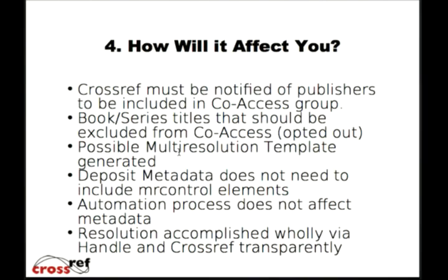The big question everybody ends up asking is: what do I have to do differently? Mostly it's the same. The first thing you have to do is say that these publishers are okay to do CoAccess for our books. You can also decide that specific books are opted out — you can tell us which ones and we'll mark them. Right now we don't have a user-facing interface in plan, but it will be on the admin page. There is the possibility of generating your own multiresolution page, but as things stand right now we expect publishers to simply send in icons. The deposits for the metadata will not have to include anything to do with multiresolution or any of the unlocked tags — just send them in as if it was your own DOI.